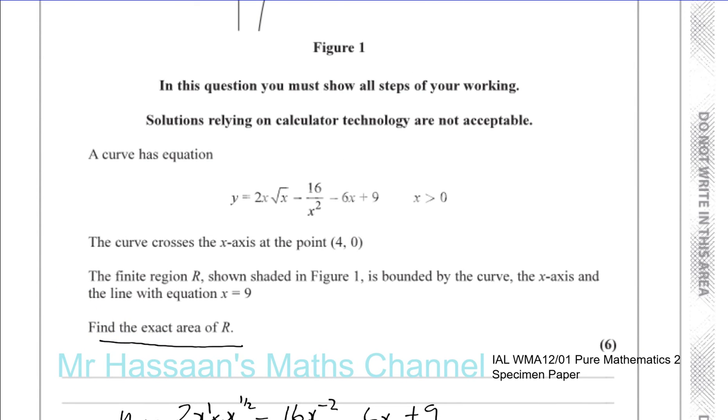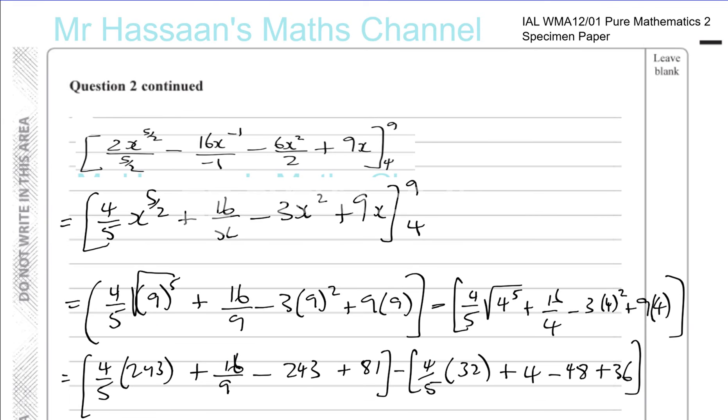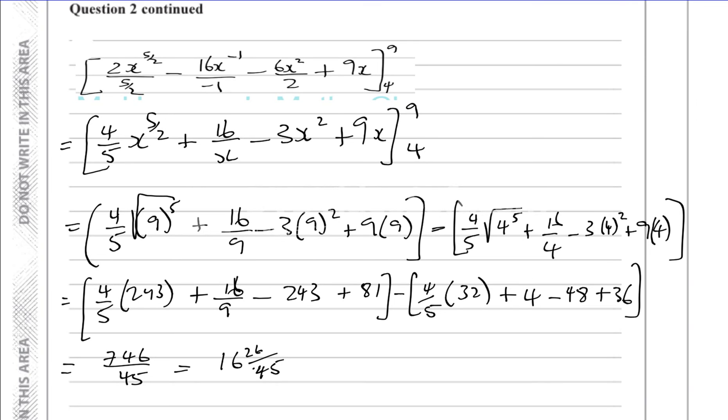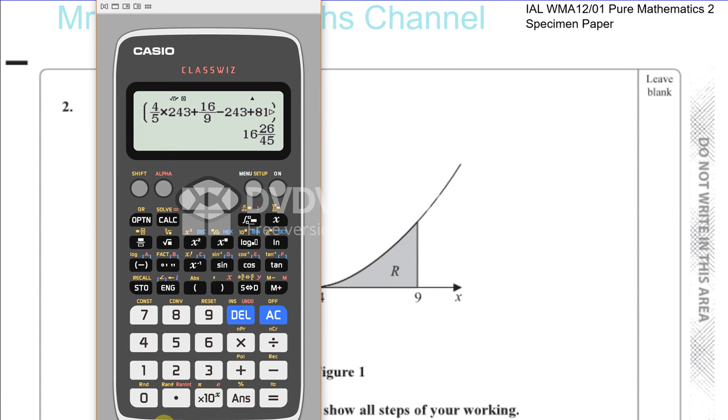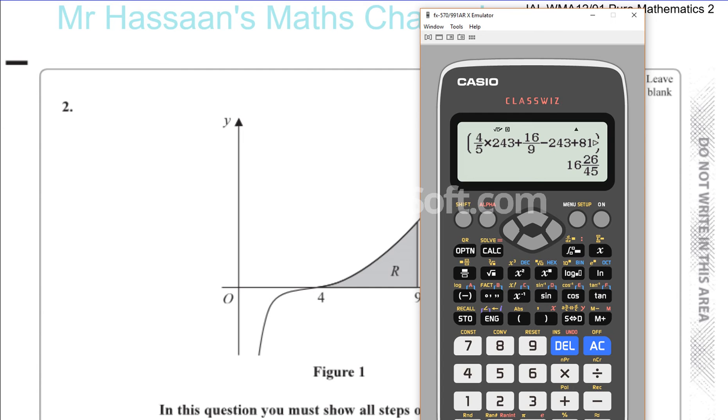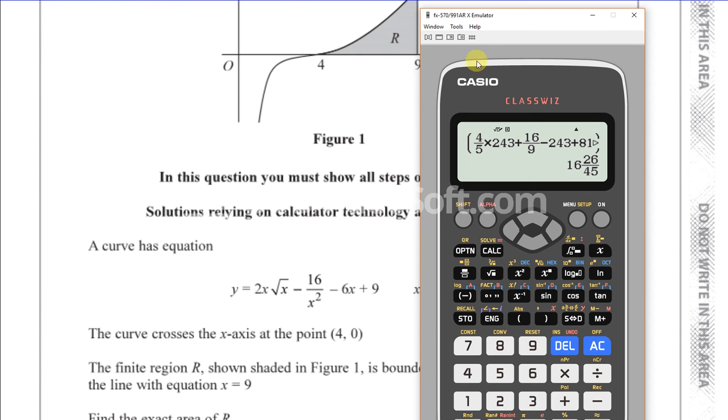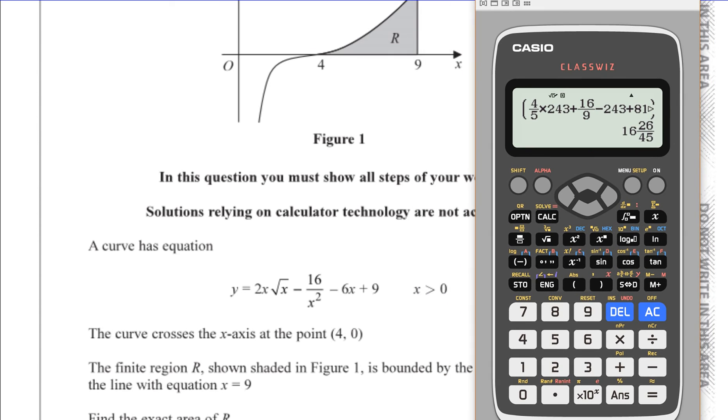We will lose marks if we do that. We can leave it in this form. So it says because the question does say if we go back to the original question, it says find the exact area of R. And there we have it. That's the exact area of R.